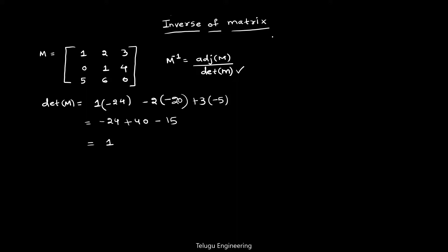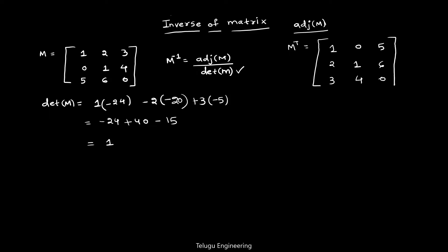We have found the determinant. Now it's time to find the adjoint of M. To find the adjoint, first take the transpose of the original matrix M. Taking the transpose, we get M transpose, and now we need to find the determinant of the minor matrix corresponding to each element.